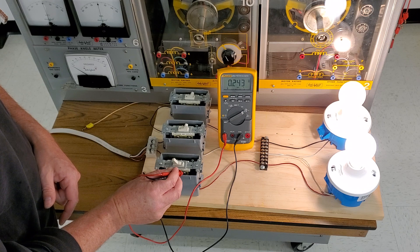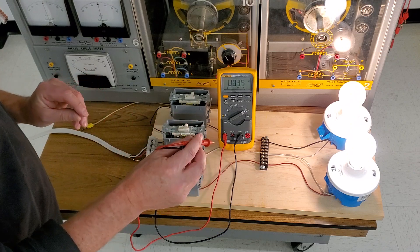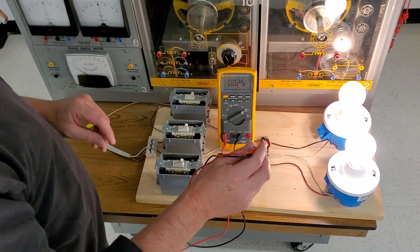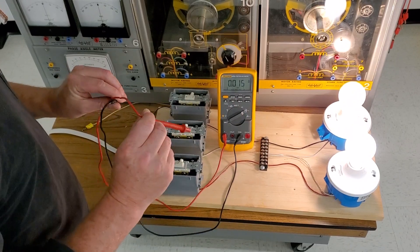The other thing that a lot of people don't realize in a multi-wire branch circuit like this is if this is a single phase, since we're balanced across these two loads, we'd actually be reading near zero amps on the neutral.